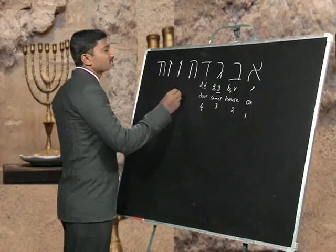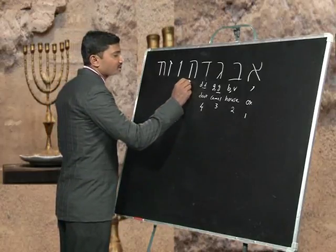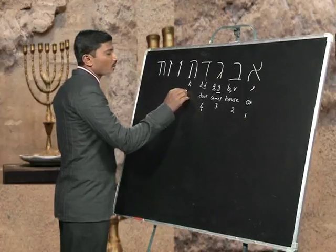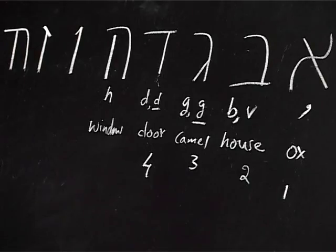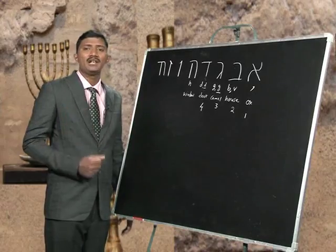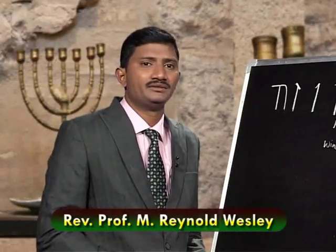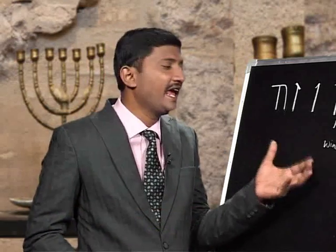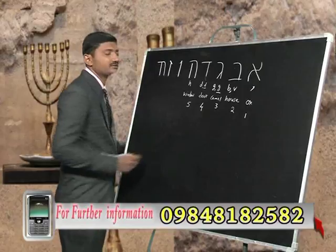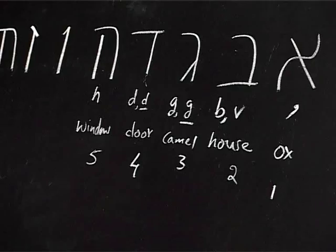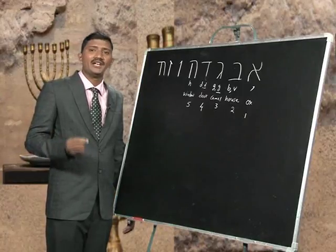The next letter we learned is He, which is the picture of a window. The meaning we get is about vision, expression, and the feeling of a person — things that are revealed. He is the picture of a window that reveals things, and its numerical value is number 5. In the Bible, 5 is associated with death; the physical death of Adam is mentioned in Genesis chapter 5, and he is the person created by God in His image and likeness.